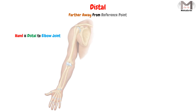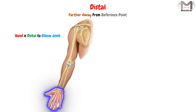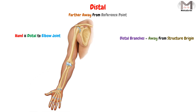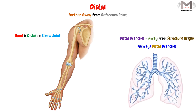The distal term, in contrast to proximal, means further away from the reference point. For example, the hand is distal to the elbow joint, meaning the hand is further away from the elbow relative to the point connecting the upper limb to the trunk. In the second use, the distal branch refers to the branch away from the structure's origin — so the distal branch of the airways is the branch positioned at the end of the airways, away from the airways' origin.